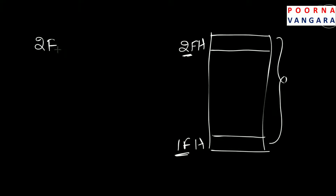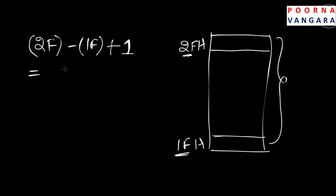The procedure is: take the last address 2F, minus 1F, and add plus 1. In any number system — decimal, hexadecimal, or binary — 1 is represented as 1 itself. So first subtract: 2F minus 1F. F minus F gives 0, and 2 minus 1 gives 1, so 2F − 1F = 10h. Then add 1.